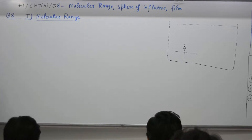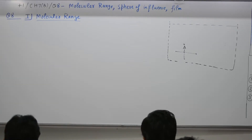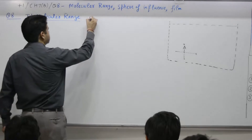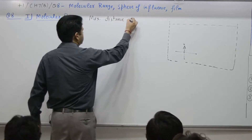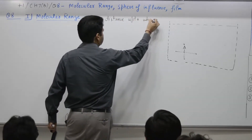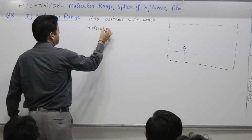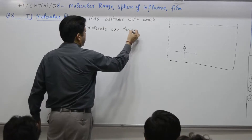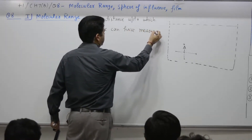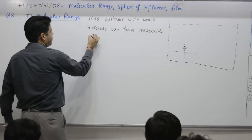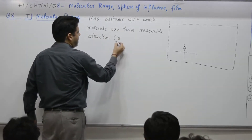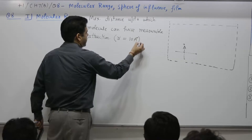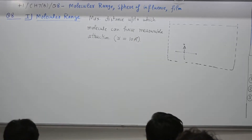The statement is: maximum distance up to which a molecule can exert some measurable attraction on another molecule. So molecular range is the maximum distance up to which a molecule can have a measurable force of attraction. This distance comes out to be R, of the order of 10 Angstrom. So that is the first part — molecular range.